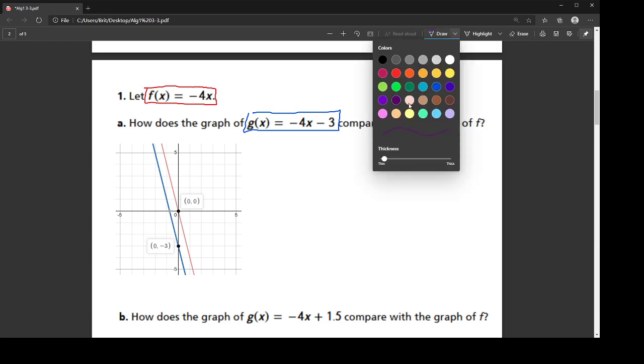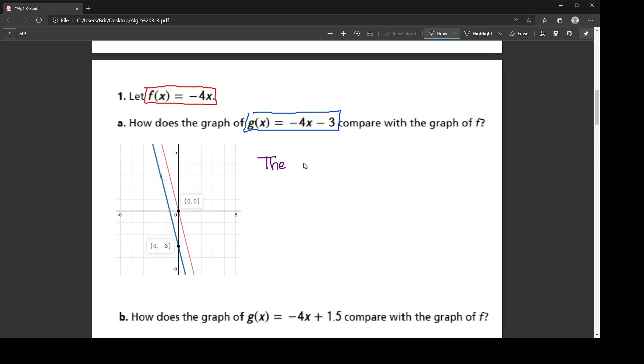So the answer to this, the graph of g of x is translated down by 3.